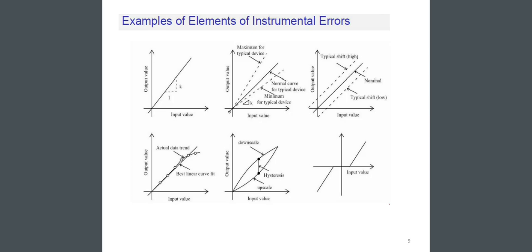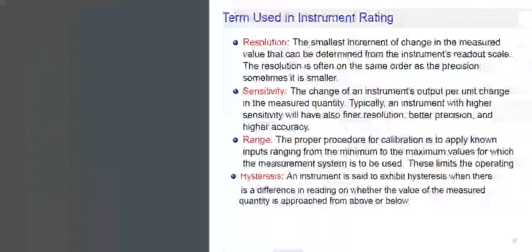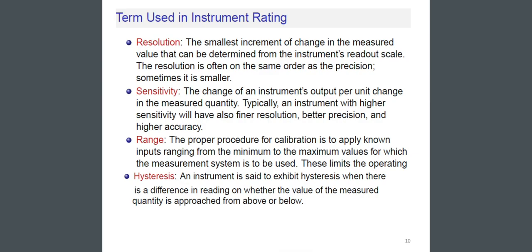Terms Used in Instrument Rating. Resolution: The smallest increment of change in the measured value that can be determined from the instrument's readout scale. The resolution is often on the same order as the precision. Sometimes it is smaller.